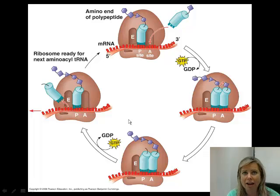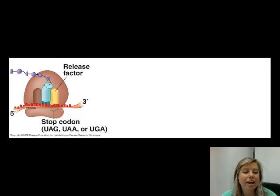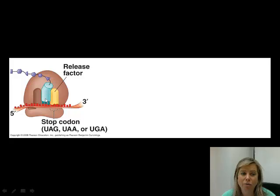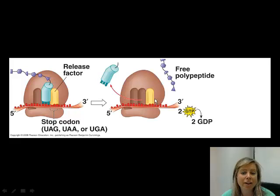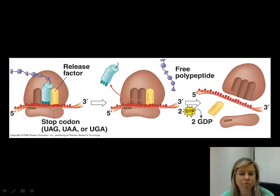This whole process is going to happen again and again until it reaches that stop codon. The stop codon can be UAG, UAA, or UGA. Those stop codons do not have a tRNA that they code for. The only thing that's going to click to them is something called a release factor. What the release factor does is make everything fall apart — the polypeptide is free to get folded and turn into a protein. That's the whole point of those stop codons.